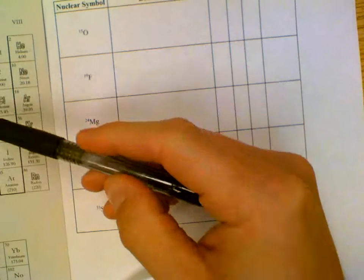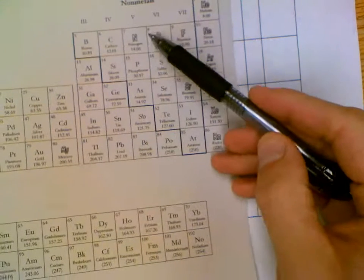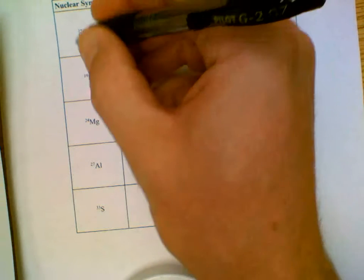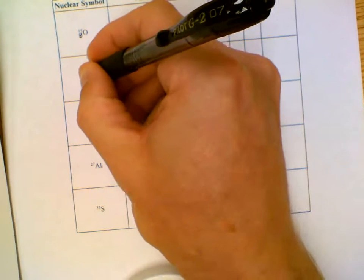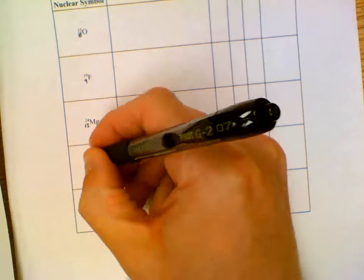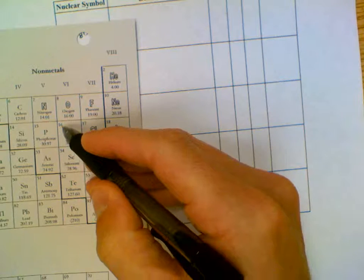So we need to find oxygen. Oxygen's atomic number is 8. It's the top left number on the periodic table provided to you in class. Fluorine's atomic number is 9. Magnesium is 12. Aluminum is 13. And sulfur's top left number is 16.